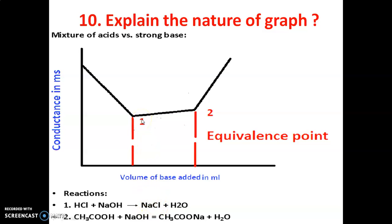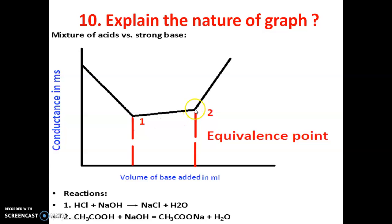After equivalence point 1, we continue adding NaOH. Now the reaction takes place between acetic acid and NaOH. In this case, we are getting an ionizable salt — sodium acetate — which is a strong electrolyte. Therefore, the conductance increases up to equivalence point 2. At equivalence point 2, complete formation of sodium acetate takes place.